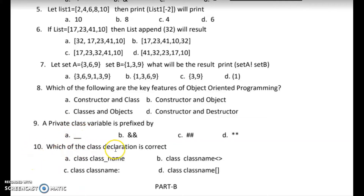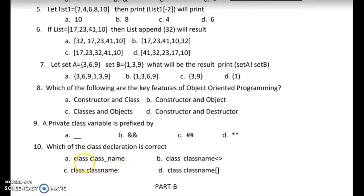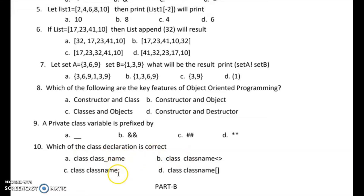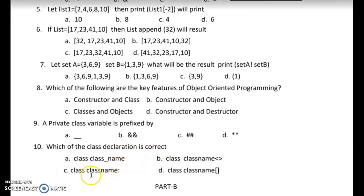Question 10: which of the following class declarations is correct? The class keyword is followed by the class name, and at the end of the class name there should be a colon symbol. So the correct class declaration uses the class keyword, the class name, and ends with a colon.